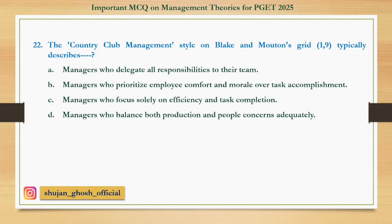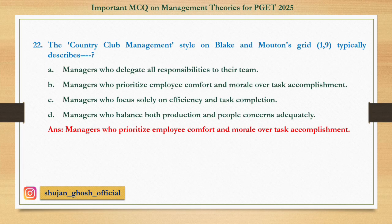Question 22: The country club management style on Blake and Mouton's grid is typically described as — Option A: Managers who delegate all responsibilities to the team. B: Managers who prioritize employee comfort and morale over task accomplishment. C: Managers who focus solely on efficiency and task completion. D: Managers who balance both production and people concerns adequately. Answer is: Managers who prioritize employee comfort and morale over task accomplishment.